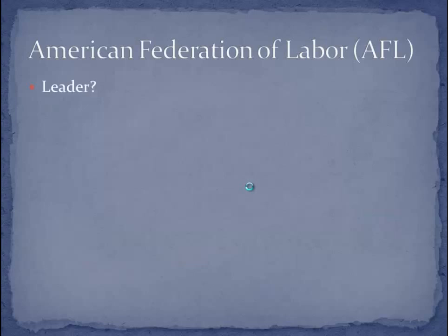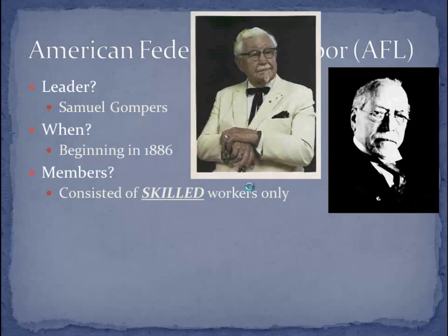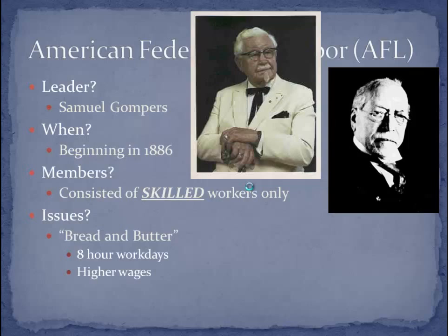Shortly after we have the American Federation of Labor, or the AFL, led by Samuel Gompers. The AFL really began in 1886, and Gompers was president until he died in 1924. The key difference between the AFL and the Knights of Labor is that the AFL consisted of only skilled workers. They focused on what Gompers called bread and butter issues: an 8-hour work day, higher wages, and better working conditions. The AFL traditionally did not embrace strikes or violent tactics, and during World War I the AFL did not strike.